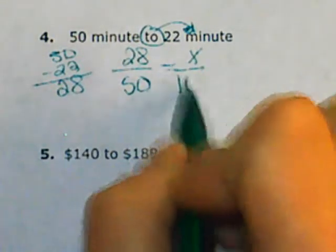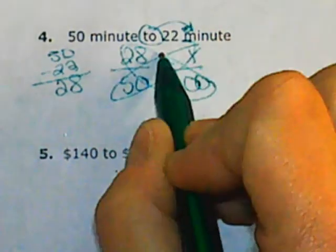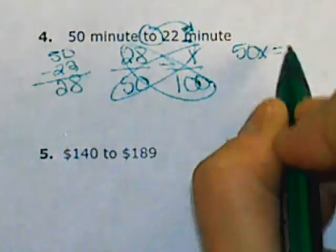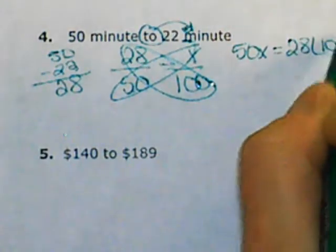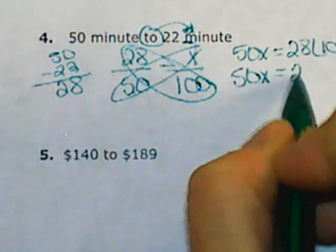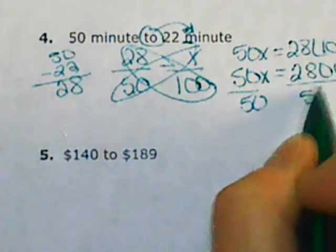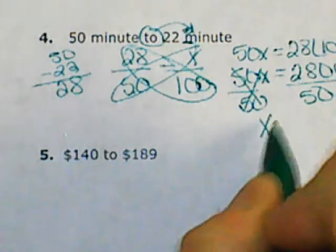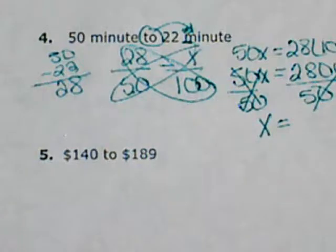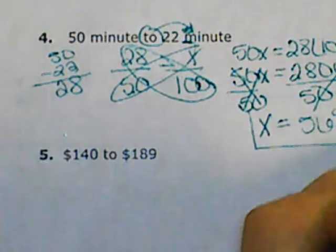Set it equal to x over 100 and cross-multiply. 50 times x equals 28 times 100. Solve your equation: 50x equals 2800. Divide both sides by the coefficient, and x equals 56%.